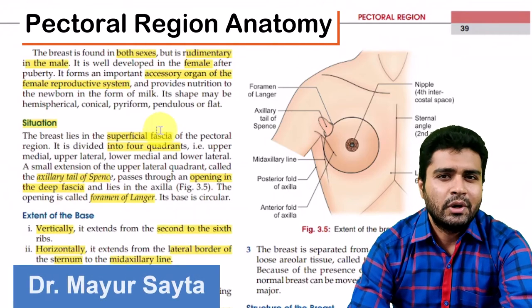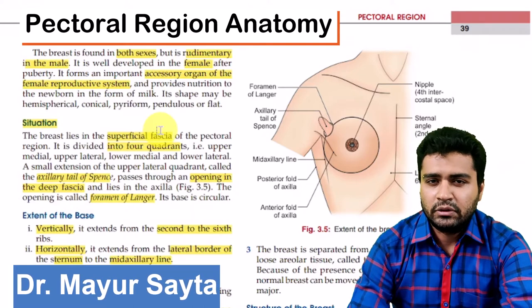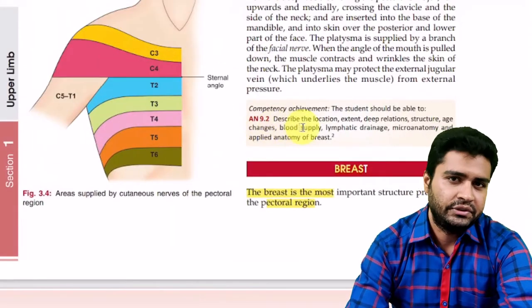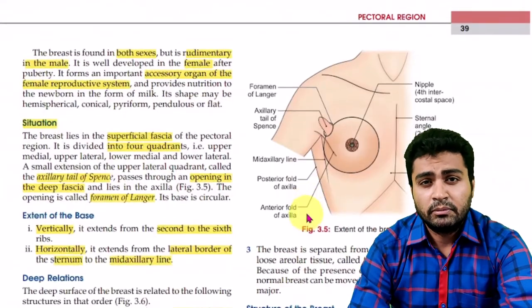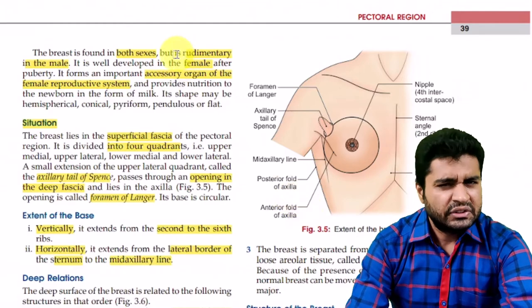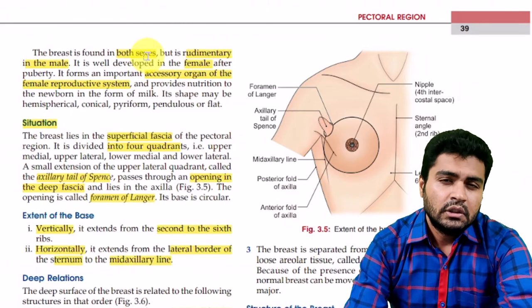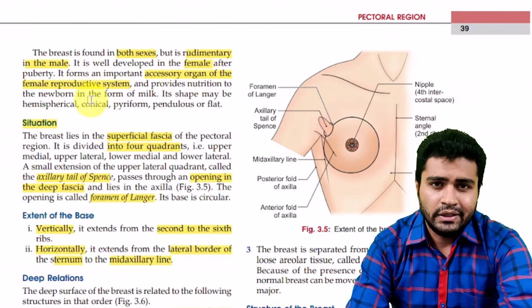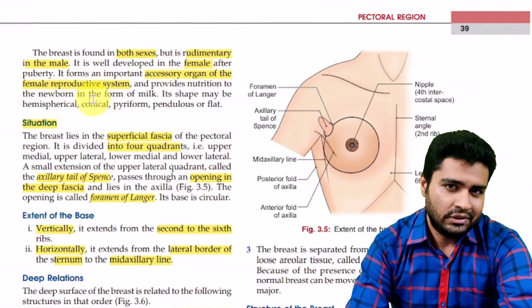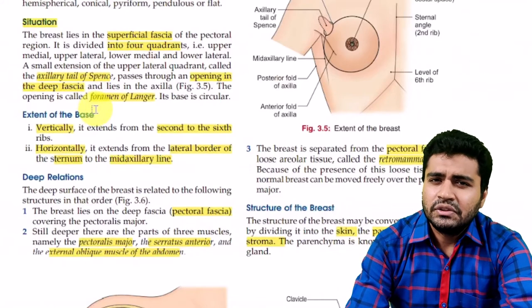Hello friends, today we are going to discuss upper limb anatomy. We are starting from chapter three, which is the pectoral region, and we are discussing the topic of breast tissue. It is the most important structure present in the pectoral region. It is one of the modified sweat glands and is present in both sexes, but in males it is rudimentary and not much developed. In females it is very well developed and they are the accessory organs for the reproductive system, producing milk and giving nutritional support to the child.